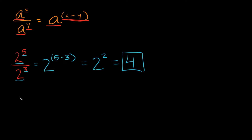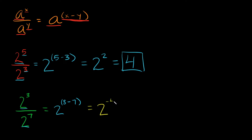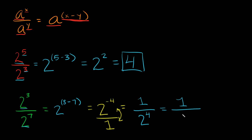Let's do another one. What if we had 2 to the 3rd divided by 2 to the 7th? Same base, so we keep it and subtract the exponents, starting with the top: 3 minus 7, which is negative 4. When you have a negative exponent, you put the number over 1, flip the fraction, and make the exponent positive. So this becomes 1 over 2 to the 4th, which equals 16. Your answer is 1/16.